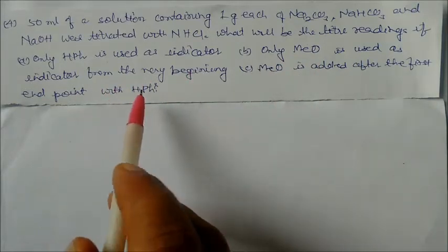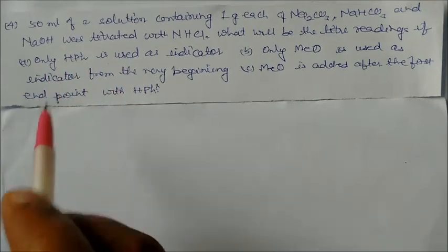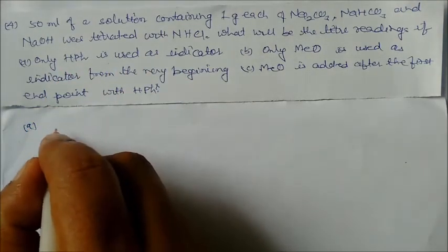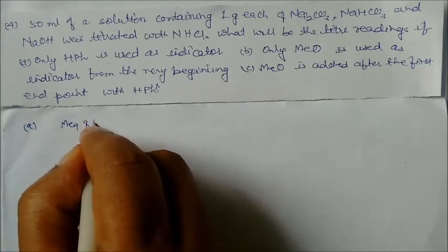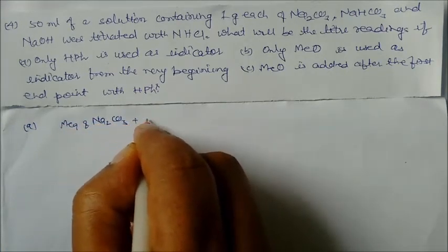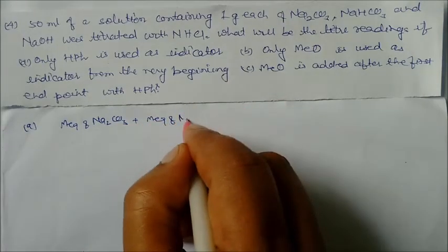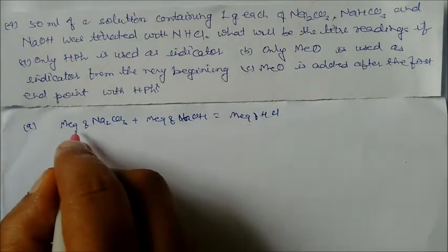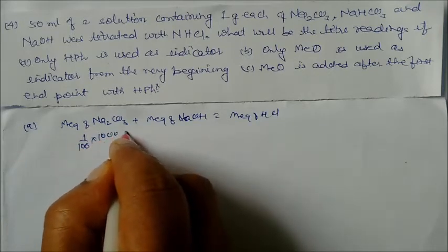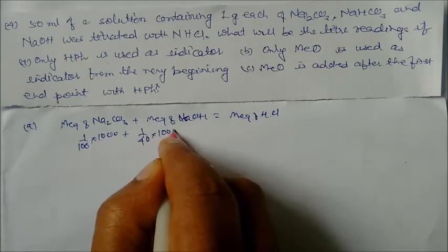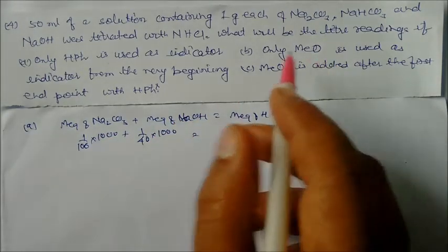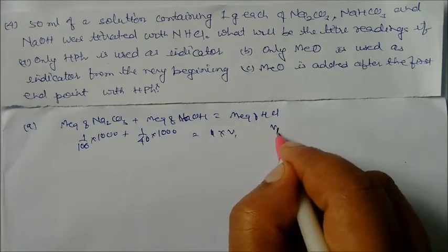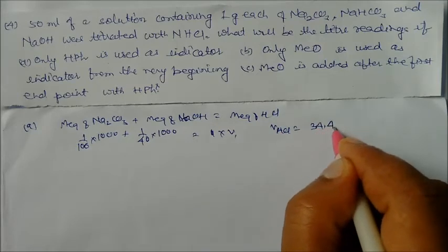Case 1 — only phenolphthalein as indicator: milliequivalents of Na₂CO₃ + milliequivalents of NaOH = milliequivalents of HCl. So: (1/106) × 1000 + (1/40) × 1000 = 1 × V₁. Solving, V₁ = 34.4 mL. This is the titration reading for phenolphthalein only.